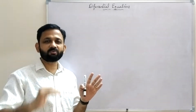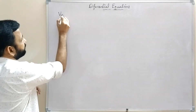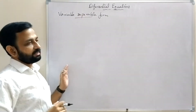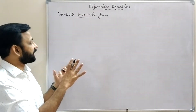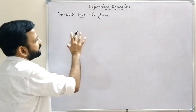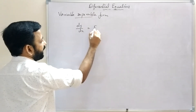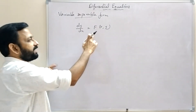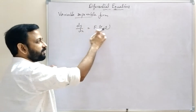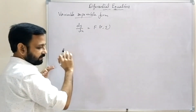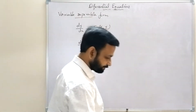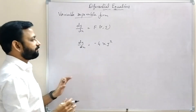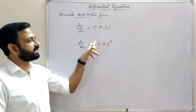The first method is variable separable form. In this form, the variables can be separated. The differential equation is of the form dy/dx = f(x,y), where the right-hand side is a function in x and y. An example is dy/dx = -4xy².